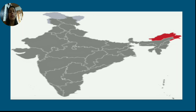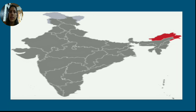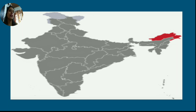Arun means sun. The easternmost state of India is Arunachal Pradesh, and this is the state where sunrise happens first. It receives sunrise first among all Indian states. That is why it is called Arunachal Pradesh — the place where sunrise comes first. The village of Dong is in Arunachal Pradesh.